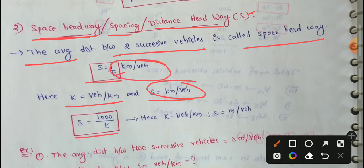Now, S equals thousand by K. If we want to express distance in meters instead of kilometers, S equals meters per vehicle. Since one kilometer equals thousand meters, S equals thousand by K.